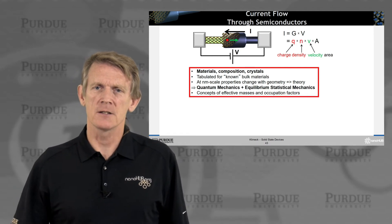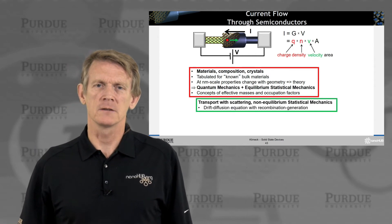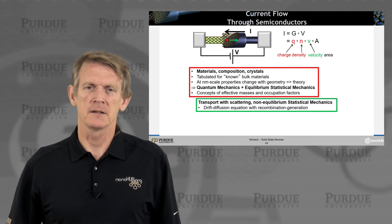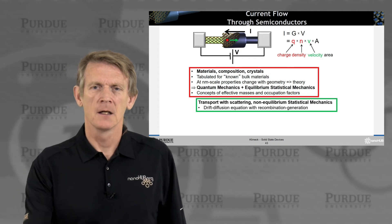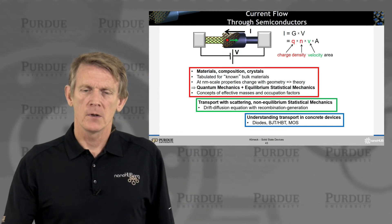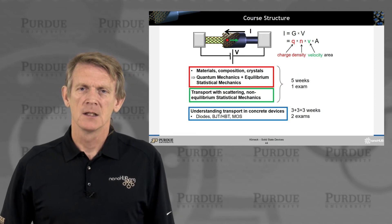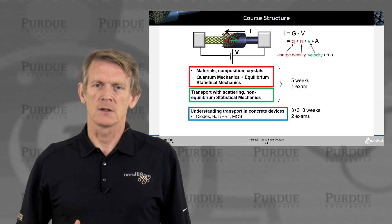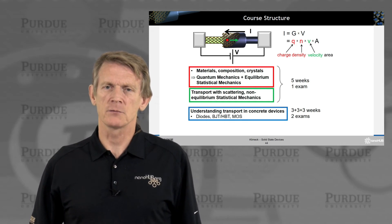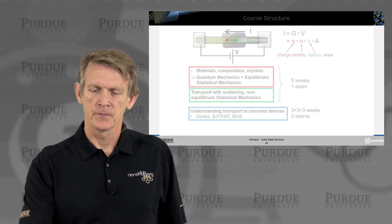Once we have the charge and its density, we can talk about the velocity. That's when we get into current and transport, and really start to build the concept of flow of charge in our understanding. At the end of the course, we'll look at devices as well. The first five weeks cover fundamentals dealing with materials and non-equilibrium statistical mechanics. The majority of the course then deals with concrete devices such as diodes, BJTs, and MOS devices.